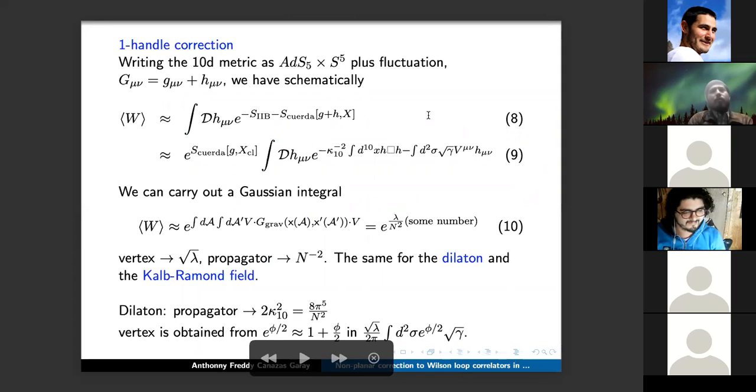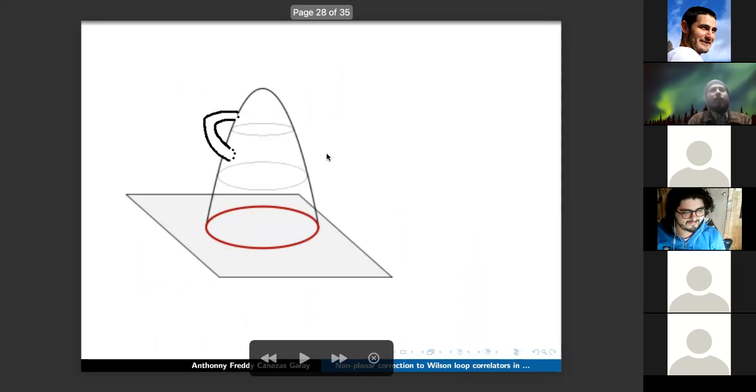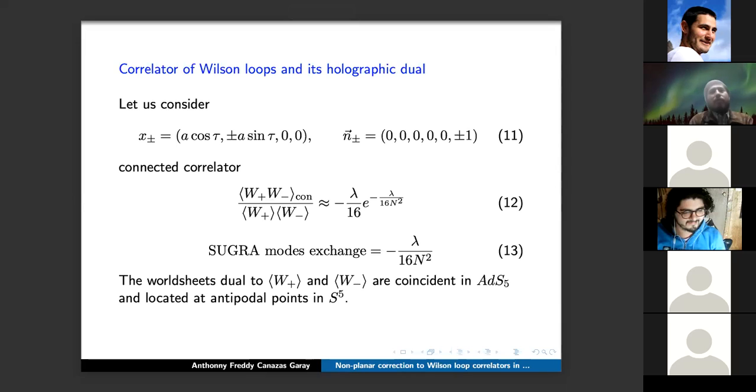Next. The string amplitude with one handle reduces to a supergravity amplitude that can be integrated in the Gaussian approximation, so we have some kind of vertex-propagator-vertex structure. This gives lambda over N squared times some number. And this is because each vertex gives a square root of lambda factor and the propagator gives one over N squared factor. Of course, one should take care of numerical factors. For example, for the dilaton we have that its propagator has that factor, and the vertex is obtained from the expansion of the dilaton coupling in the Nambu-Goto action.